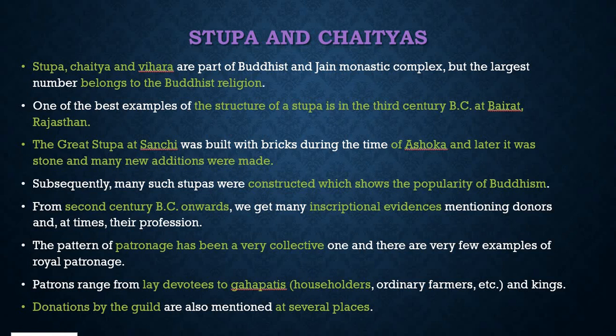Subsequently many more Stupas were built, showing the popularity of Buddhism. From the 2nd century BCE onward, we get many inscriptional evidences mentioning donors and at times their professions. The railings of Stupas have full descriptions of those who donated during construction. The pattern of patronage was very collective — there are very few examples of royal patronage alone. Patrons ranged from lay devotees to grahapathis (householders, ordinary farmers), and kings.